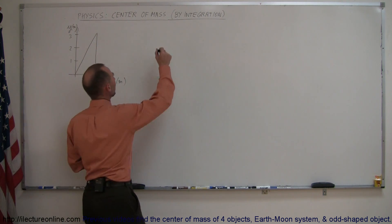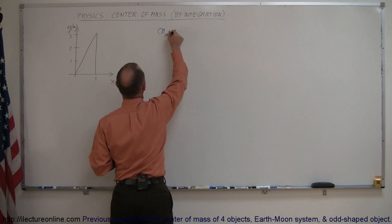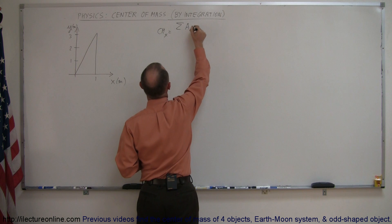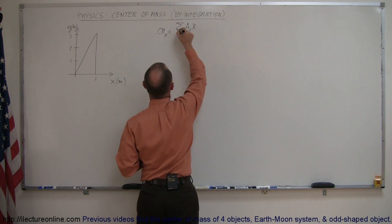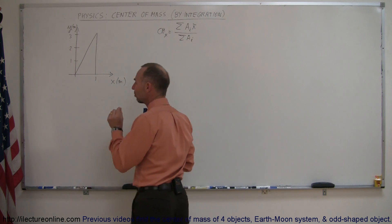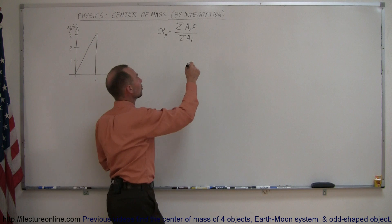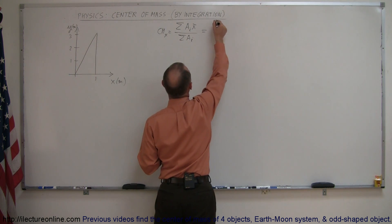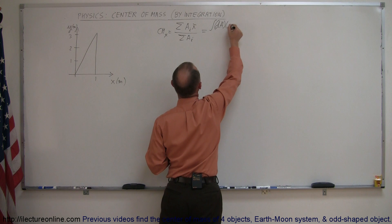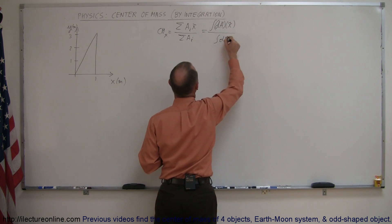Instead of using the following methodology — that the center mass in the x-direction is equal to the sum of all the areas of each piece times the center mass of each piece in the x-direction, divided by the sum of all the areas — we're going to snip it up into small little segments. So instead of using the summation symbol, we're going to use the integration symbol. This is going to be the integral of all the little dAs multiplied times the center mass of each dA, divided by the sum of all the little dAs.